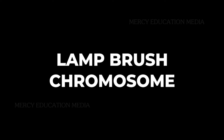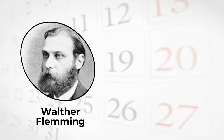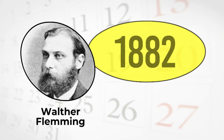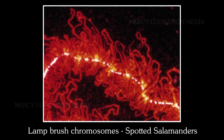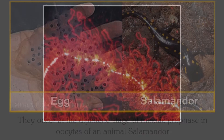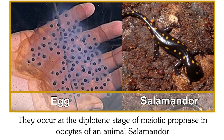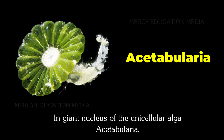Lamp brush chromosomes were first observed by Fleming in 1882. They looked like brushes and occur at the diplotene stage of meiotic prophase in oocytes of an animal called salamander and in the giant nucleus of the unicellular alga Acetabularia.